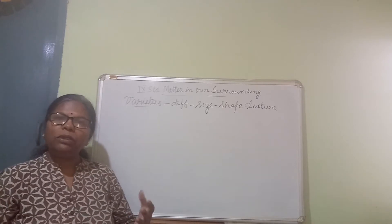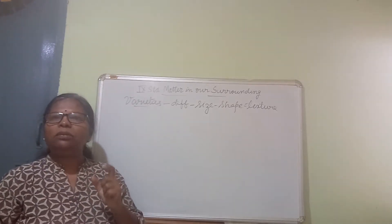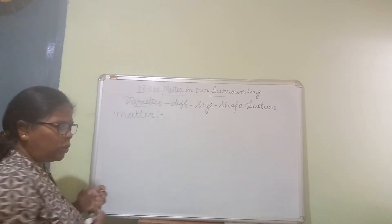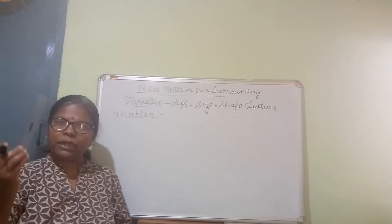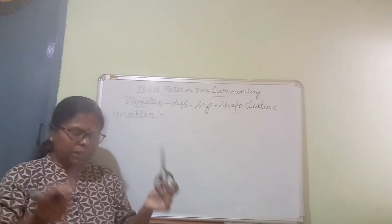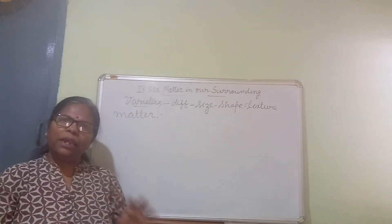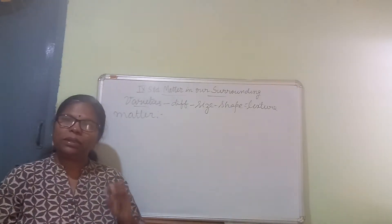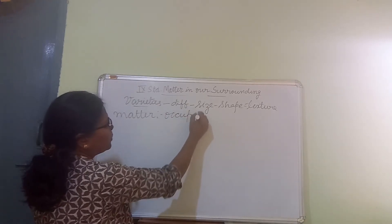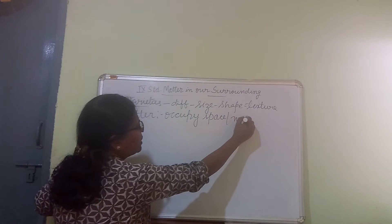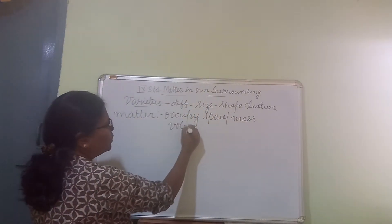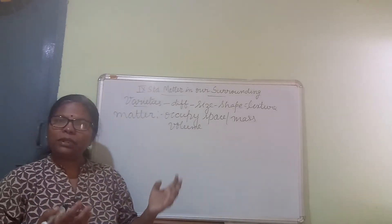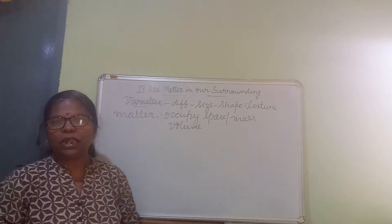So how can we define matter? We need one standard scientific definition. I have a scale and a scissor here — when I keep these things in one place, they are taking some space. That means any matter will occupy space and also has mass, meaning weight. The space occupied is called volume. Substances which have volume and mass are called matter. Mass and volume are measured in SI units — Standard International units.